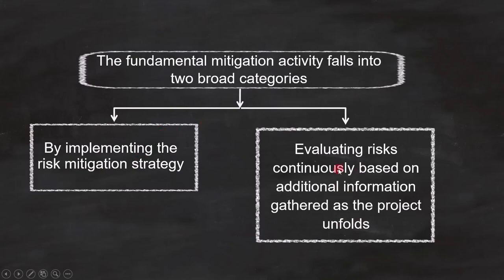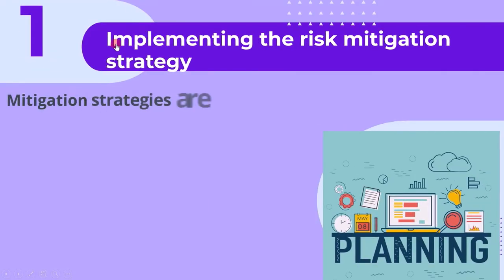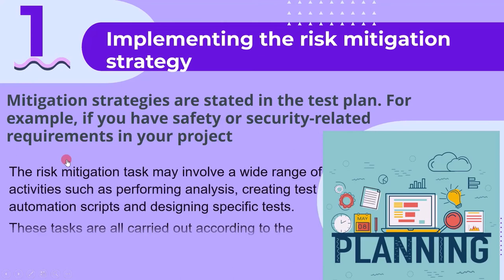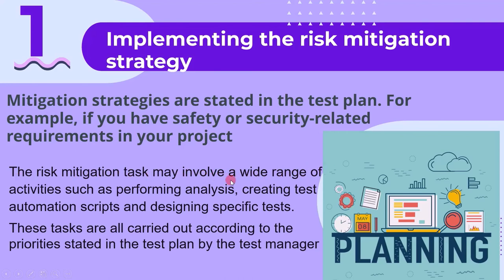The first category is implementing the risk mitigation strategy. Mitigation strategies are stated in the test plan. For example, if there are safety or security related requirements in your project, failing to fulfill such a requirement is a risk. To reduce the risk, mitigation tasks may involve performing analysis, creating test automation scripts, and designing specific tests — all carried out according to the priorities stated in the test plan by the test manager.